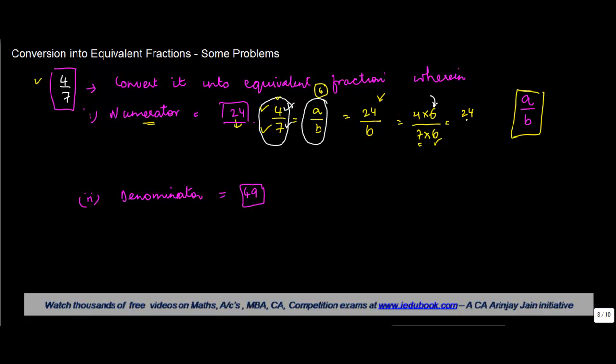And what do I get in such a case? This obviously I know is 24. 7 into 6 gives me 42. Hence 4/7 is equal to 24/42. So the number which has a numerator of 24 and which is equal to the fraction 4/7 is 24/42.